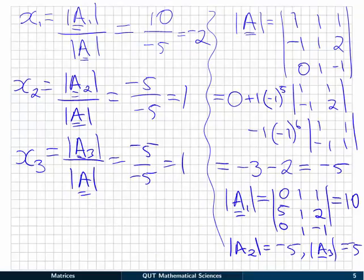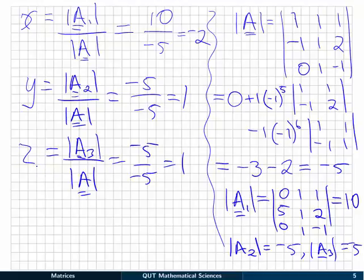And I seem to, for some reason, have called this x1, x2, and x3. I should have actually called those x, y, and z. So x equals minus 2, y equals 1, and z equals 1.